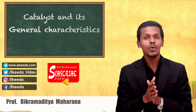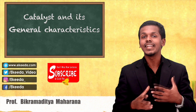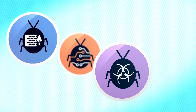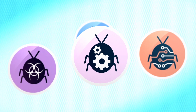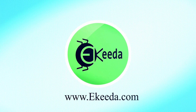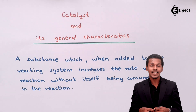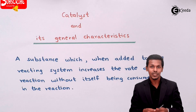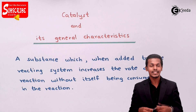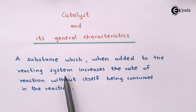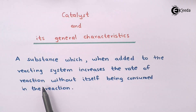We are talking about how the catalyst can affect the rate of chemical reaction and what are the general characteristics of the catalyst. The definition of catalyst is: a substance which, when added to the reacting system, increases the rate of reaction without itself being consumed in the reaction. These are known as catalysts.